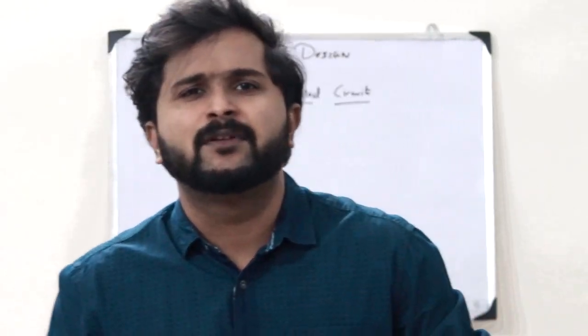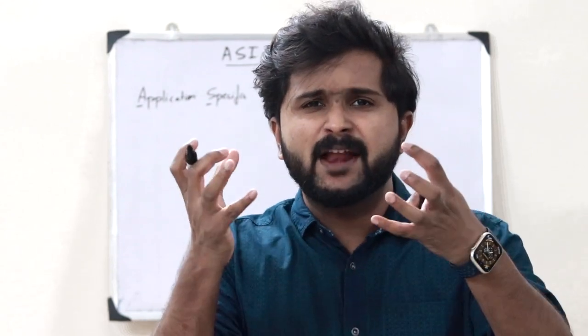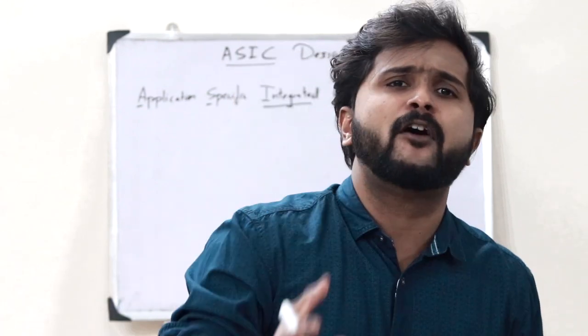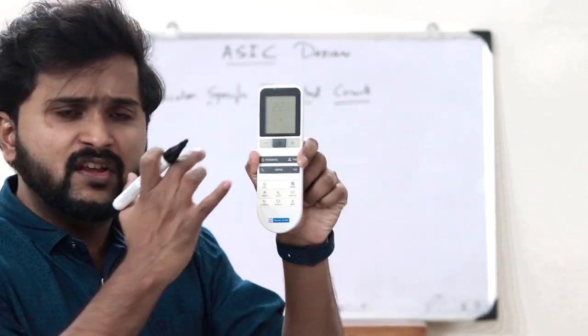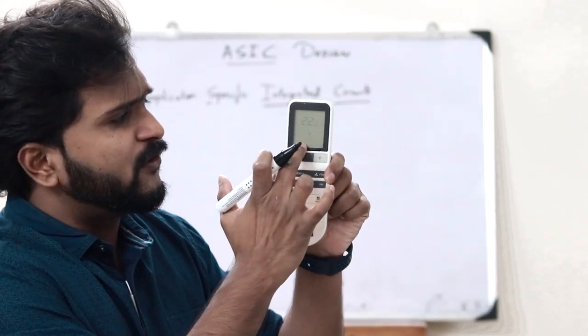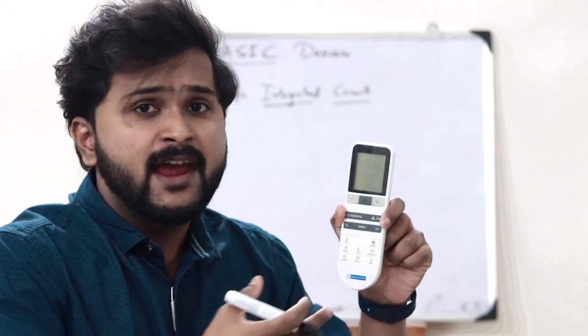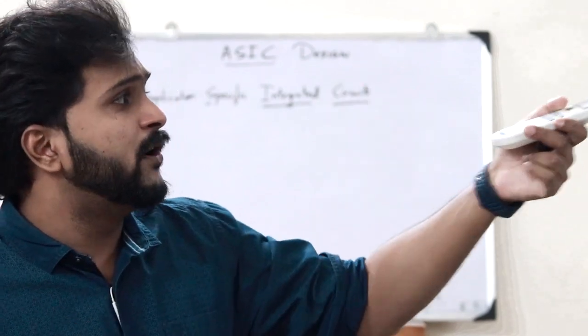Let me make that even simpler for you. Every electronic device that we see around us is made up of a multiple number of integrated circuits or ICs in order to perform a particular function. This particular electronic device is made up of a number of ICs in order to perform a particular operation — to control a particular device.